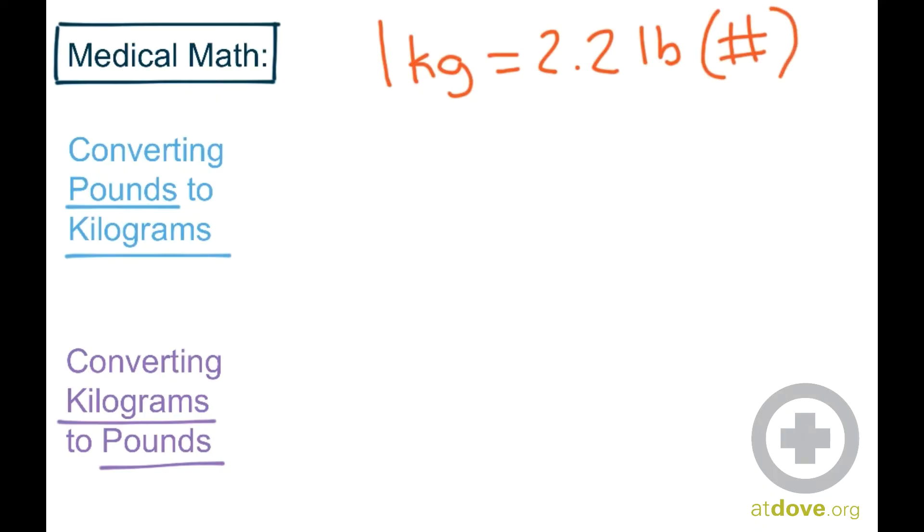So in order to convert pounds to kilograms, let's use a cat, for example. So let's say we have a cat who weighs 8 pounds. To figure out how many kilograms he weighs, we are going to divide that by 2.2. And that comes out to be 3.64 kilograms. So an 8-pound cat weighs 3.64 kilograms.